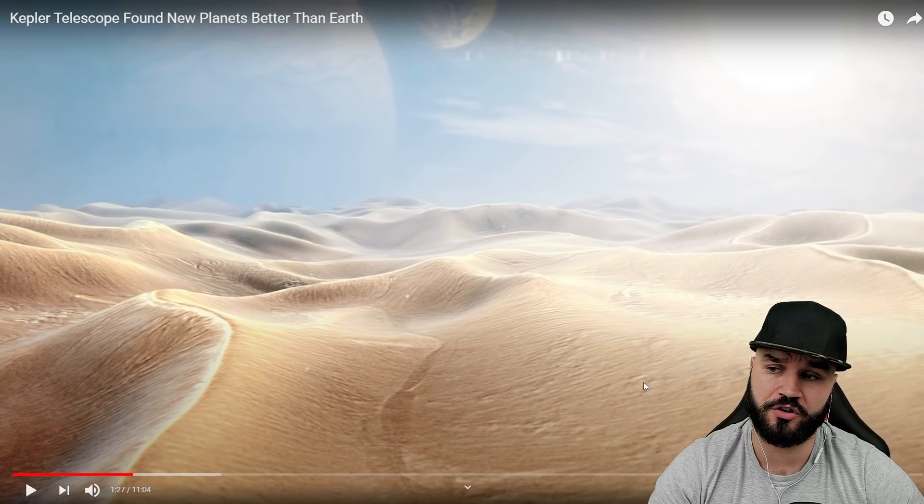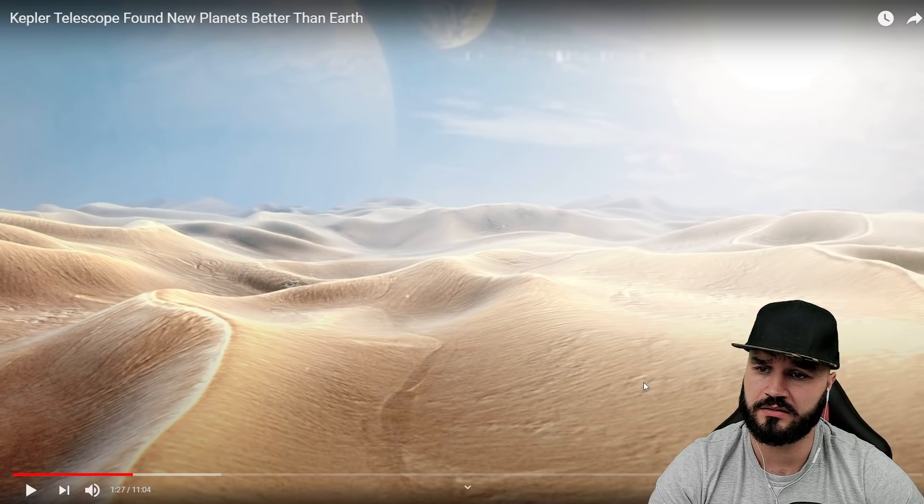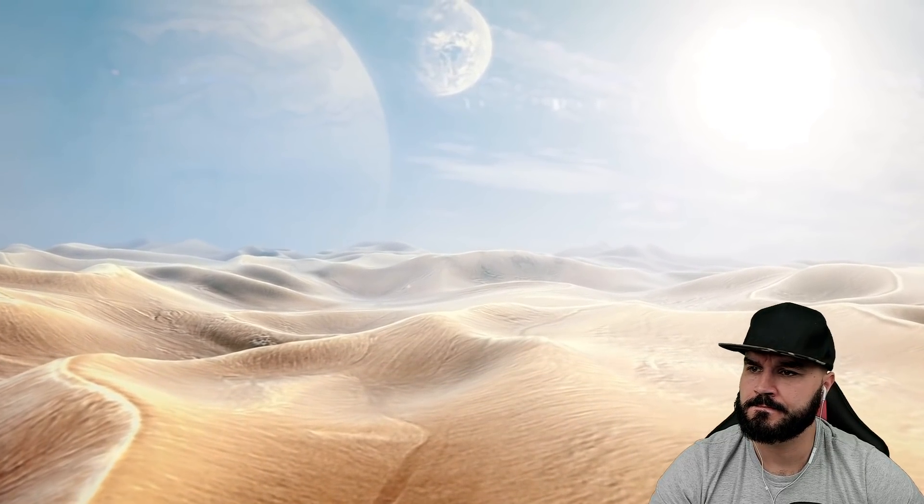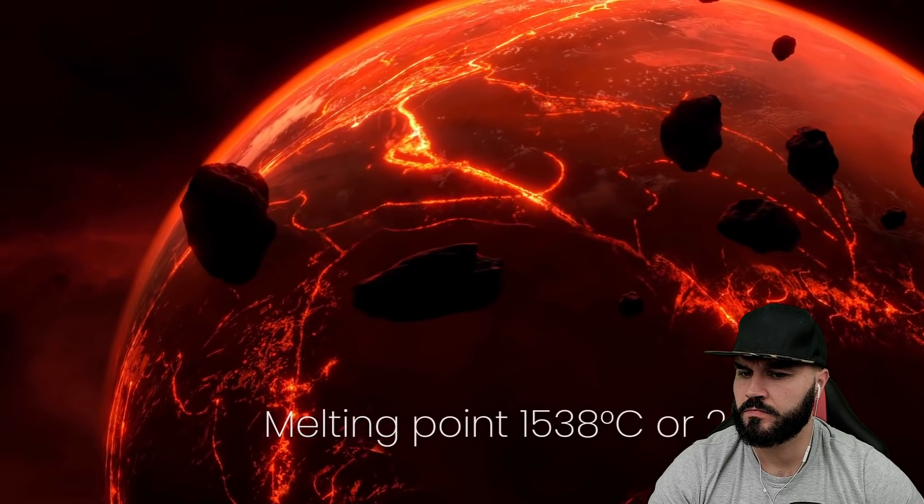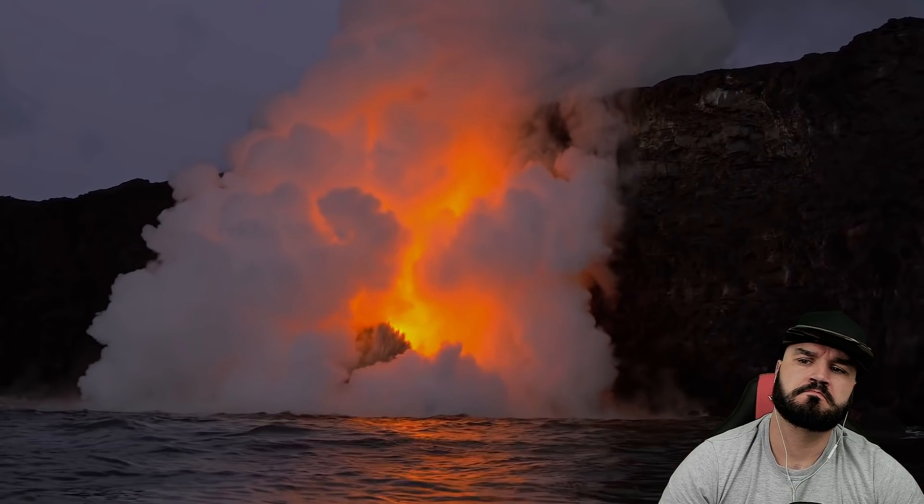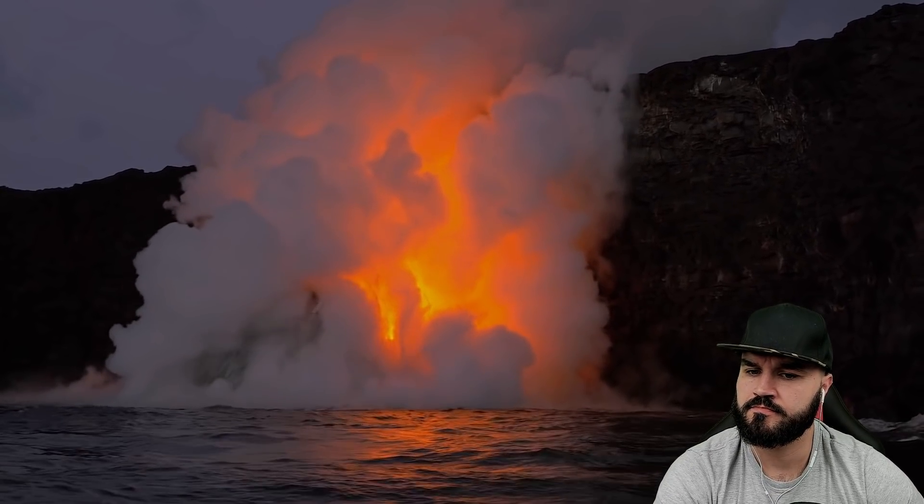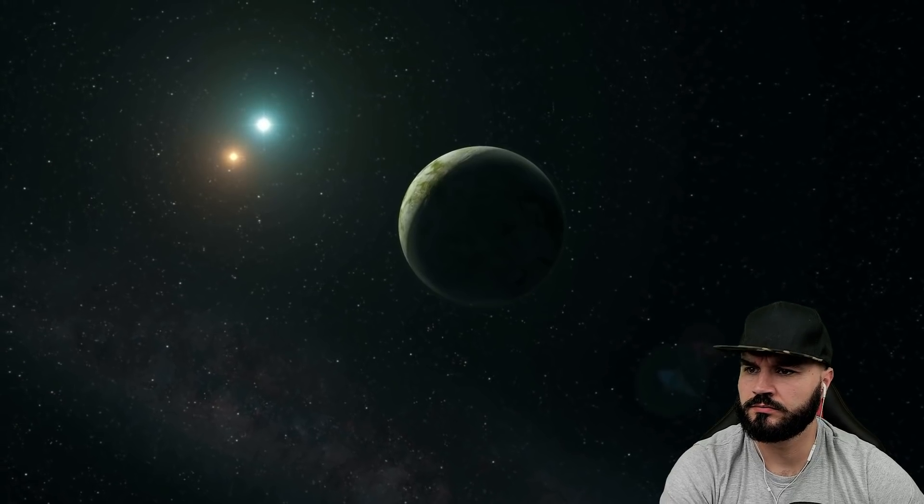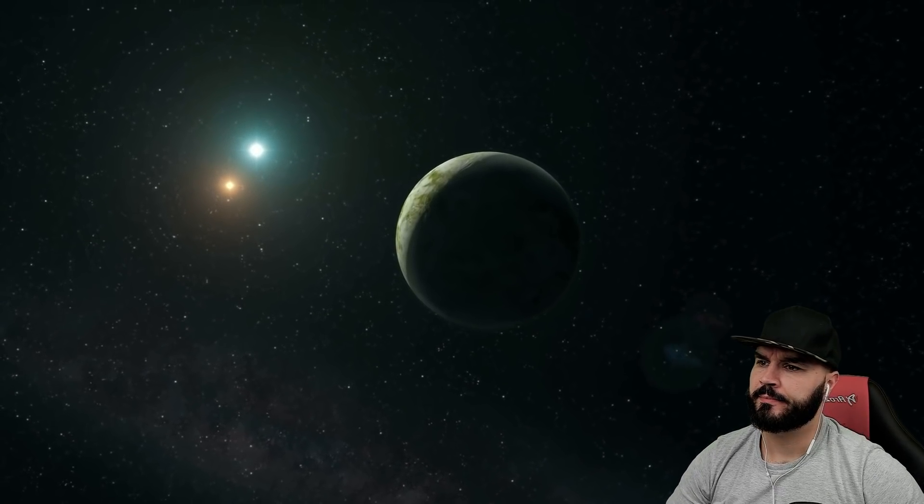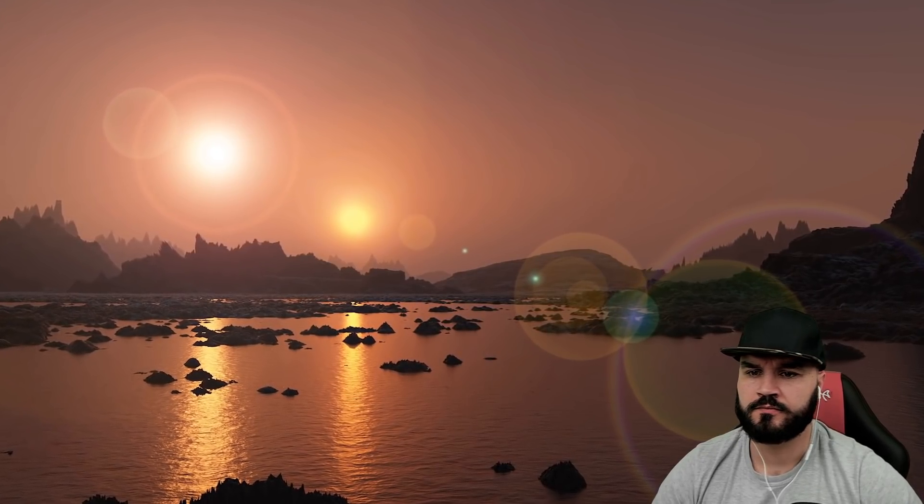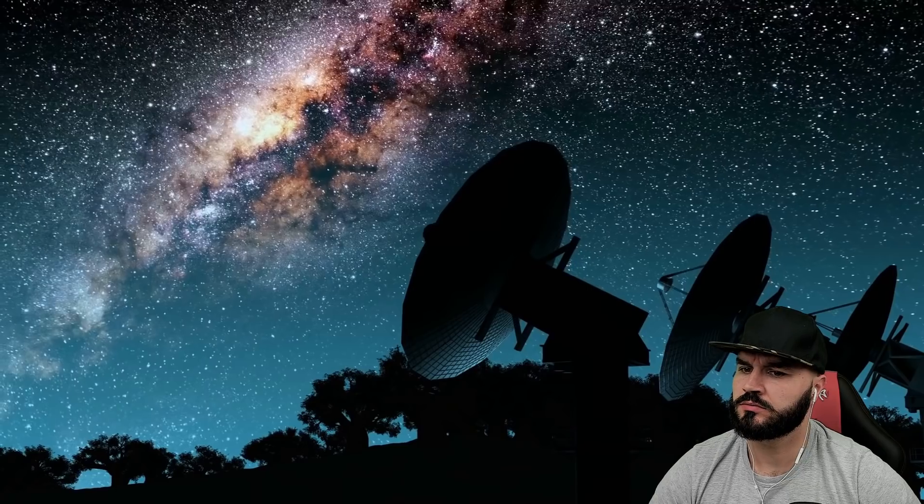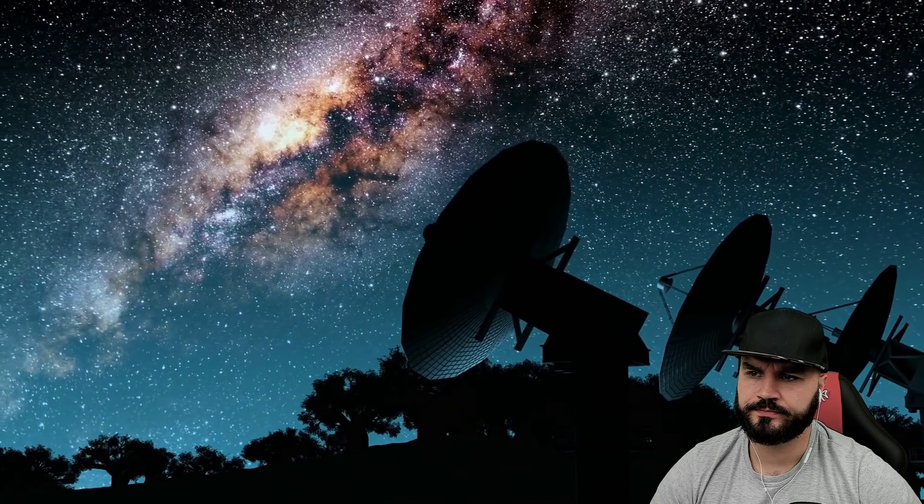There are some very strange worlds. Some have star-facing sides with temperatures that can melt iron and have entire hemispheres covered with oceans of liquid molten rock. Other exoplanets the size of Jupiter orbit not one but two stars. If you're standing on the surface of one of these planets, you'd be able to see a binary sunset. Whoa.